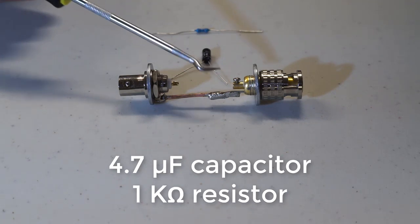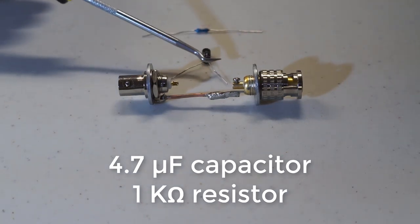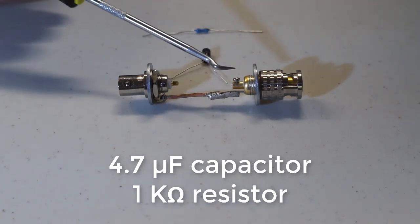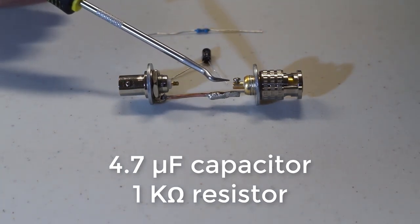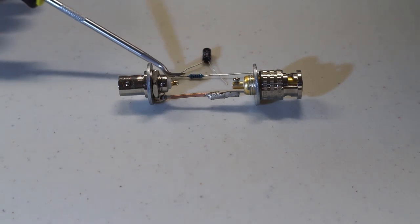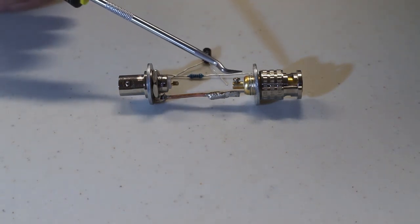The short side, the negative side of the capacitor, will go here on the male center pin, and the one kilo ohm resistor will go from the center pin of the male BNC to ground.